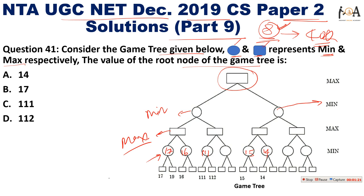Now choosing maximum from 17 and 16 gives 17. Maximum among 15 and 14 is 15. Going up, maximum between 17 and 15 is 17, so the value of the root node of the game tree is 17.